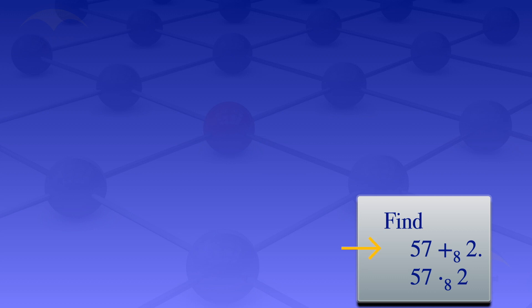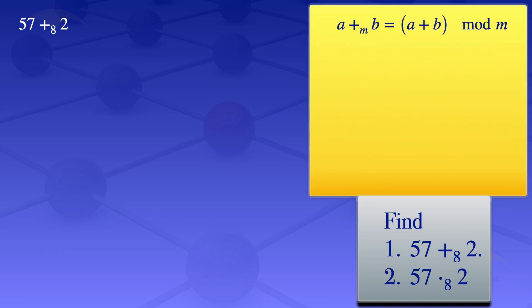I'll start with the first one, 57 plus 2 mod 8. By definition, if we are having a plus b mod m, the result is a plus b mod m. For this problem, we're evaluating 57 plus 2 mod 8. 57 plus 2 gives us 59, so we have 59 mod 8.